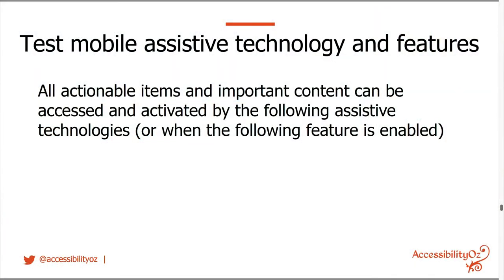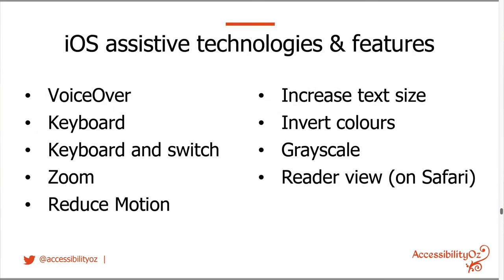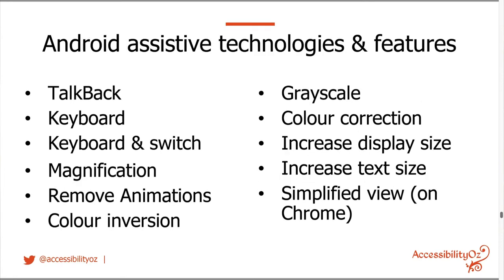The rule is that all actionable items and important content can be accessed and activated by the following assistive technology, or when the following feature is enabled. On iOS, we included VoiceOver, keyboard, keyboard and switch, zoom, reduce motion, increase text size, invert colors, grayscale, and reader view on Safari. On Android it's very similar: TalkBack, keyboard, keyboard and switch, magnification, remove animations, color inversion, grayscale, color correction, increase display size, increase text size, and simplified view on Chrome.